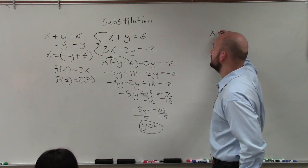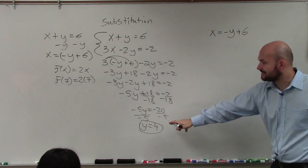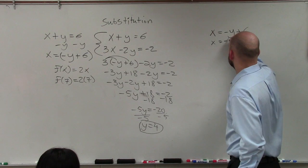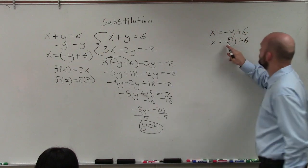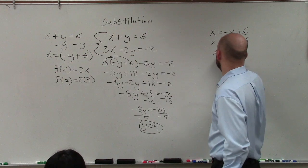So I have x equals negative y plus 6. So now I take the value of y and I plug it in. Negative 1 times 4 is negative 4. Negative 4 plus 6 is x equals negative 2.